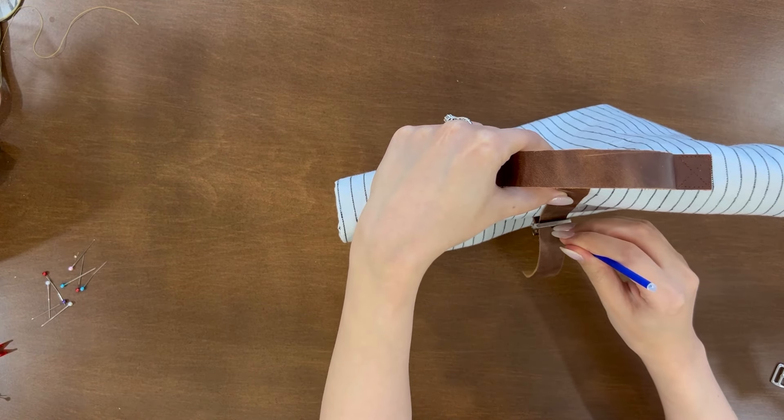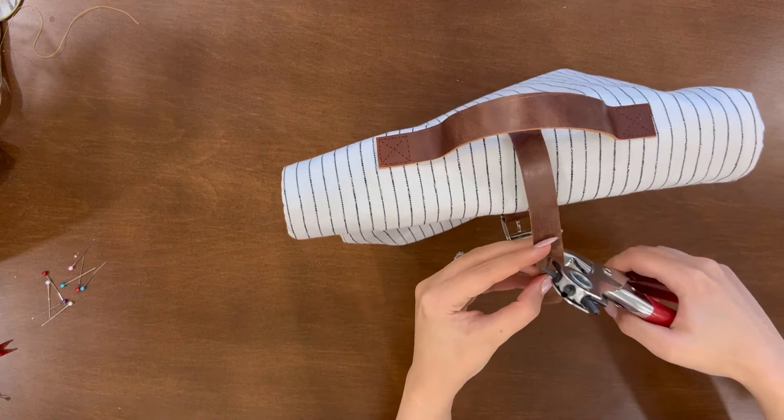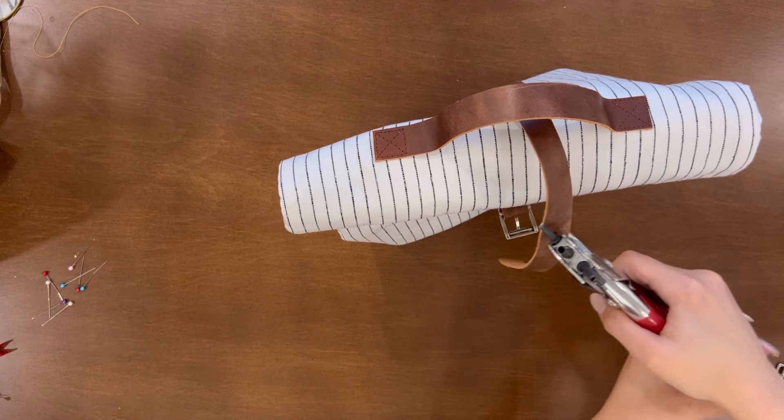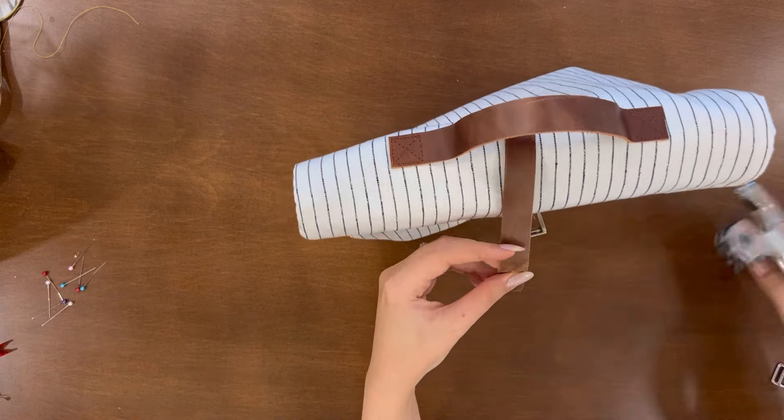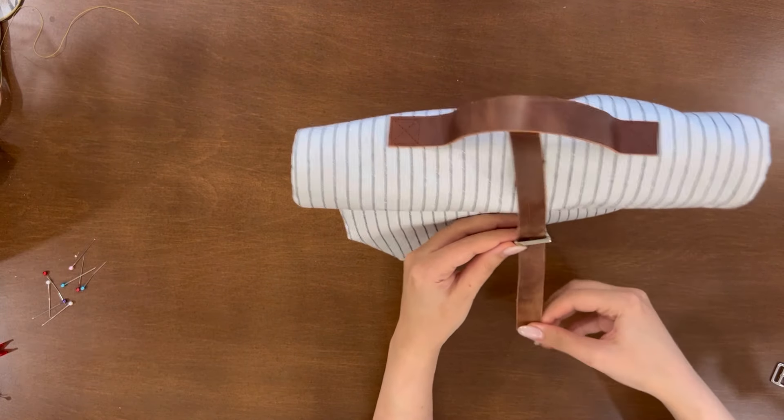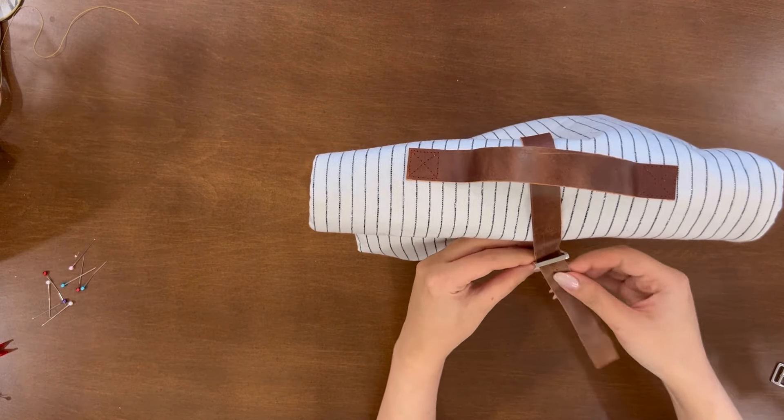After you find the right placement just mark a dot in the middle and punch it with your leather punch. Now finally close the bag with the buckle.